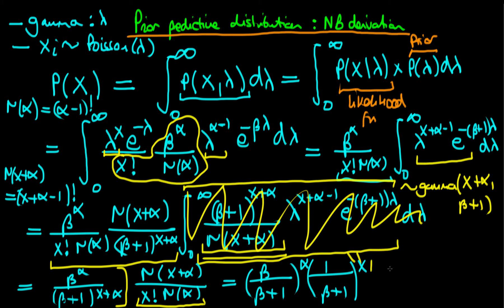So we can rewrite this whole second term as x plus alpha minus 1 choose x in NCR notation. It turns out that this density in terms of x — remember, we've integrated out all dependence on lambda — is exactly what is known as a negative binomial distribution.